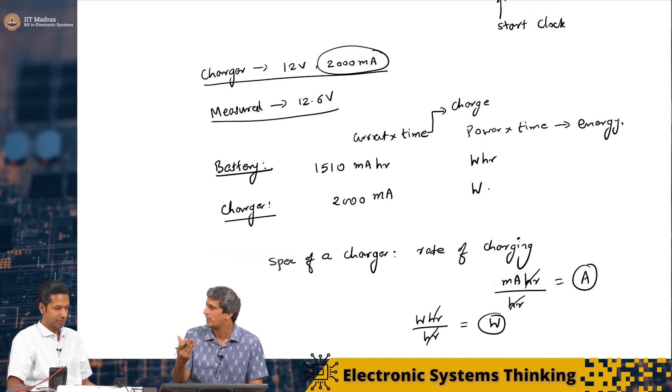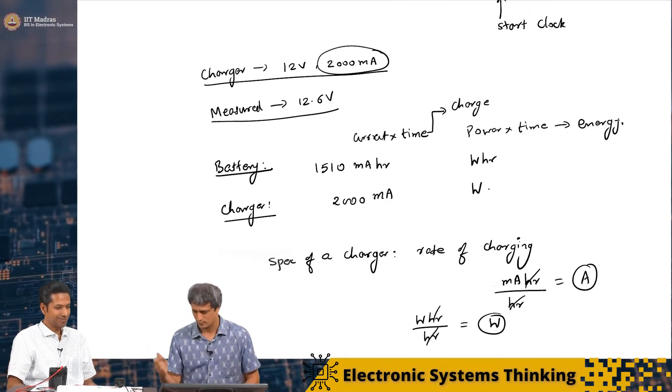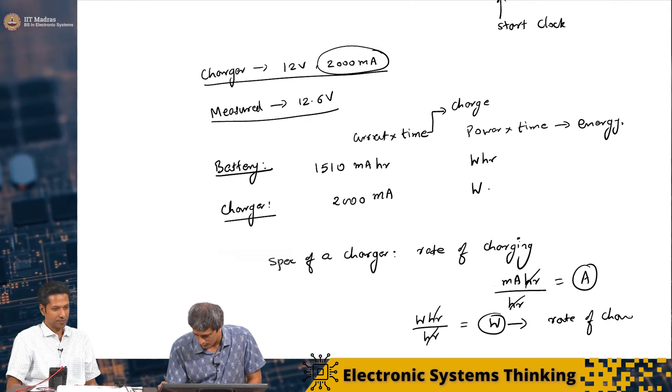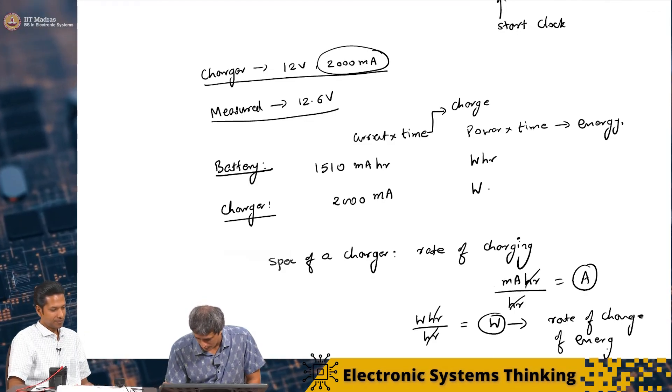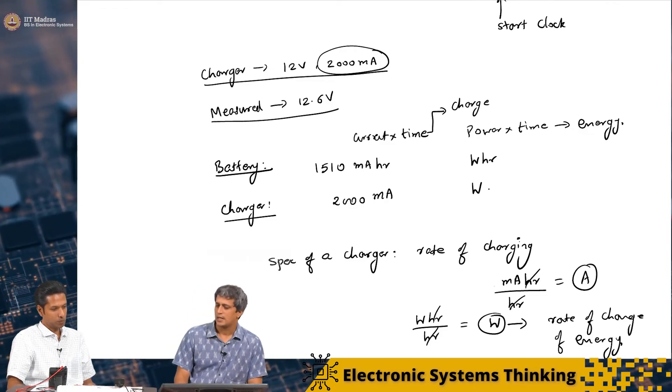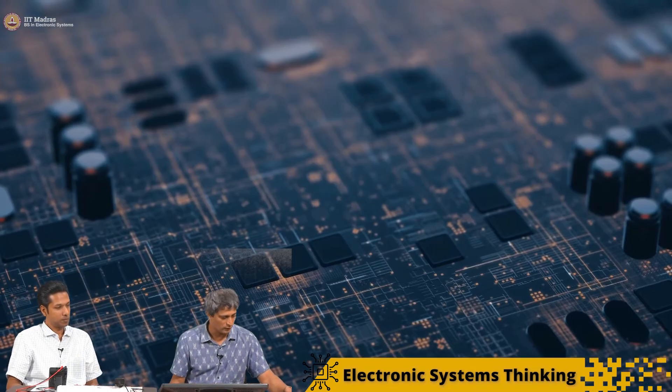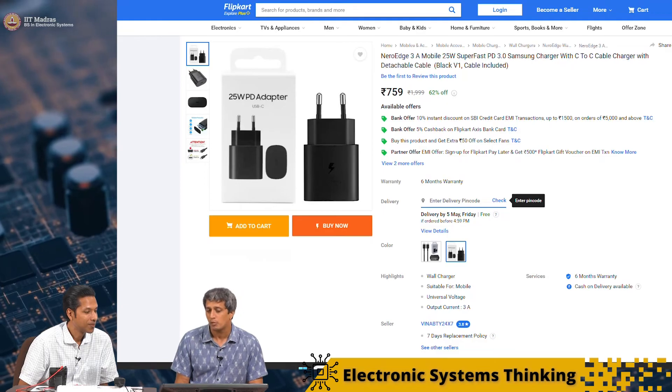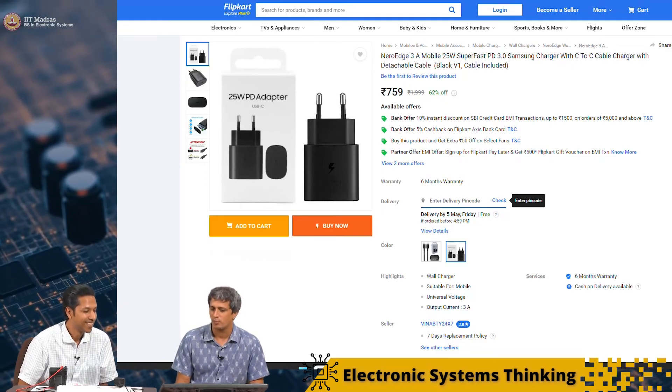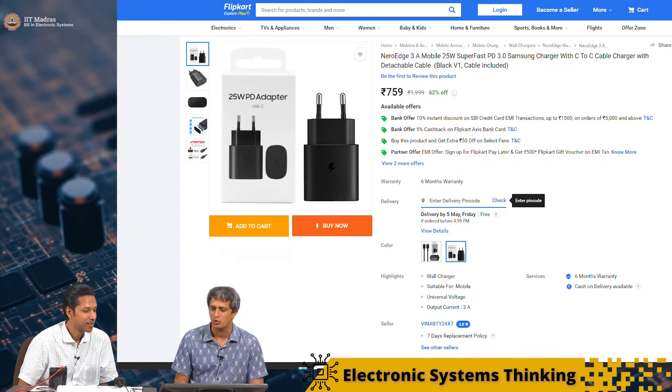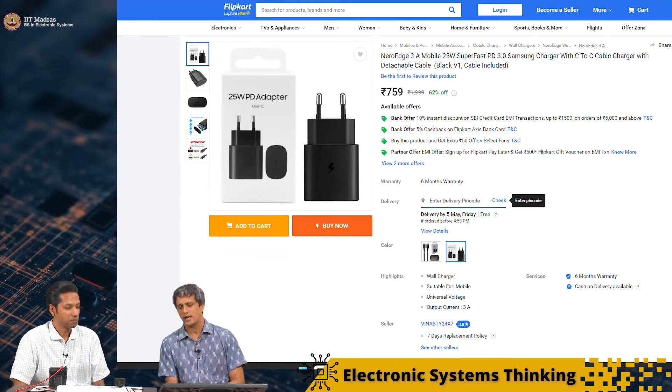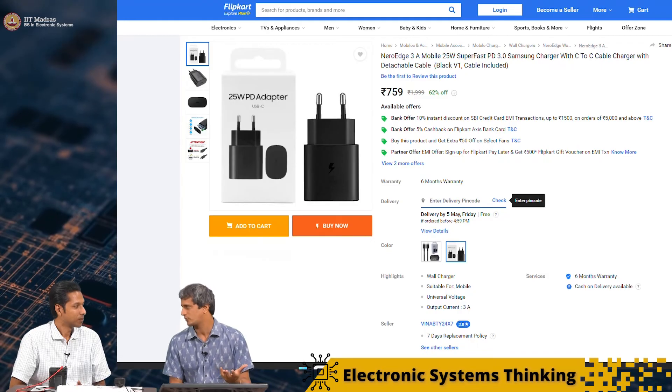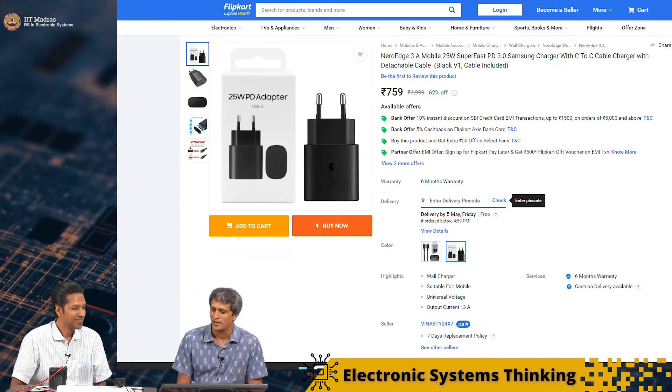So the rate of change of energy is nothing but watts. So if you look at this, watts is nothing but rate of change of energy, right. And that's why you see these, you know, if you look at your fancy chargers today, you look at this Nero Edge 3 ampere mobile 25 watt, right. So they boast about the fact that this charger is able to deliver 3 amperes of current, right. And of course, if you deliver 3 amperes of current, it's going to charge at an insanely fast rate, right. And unlike the infotainment port there.